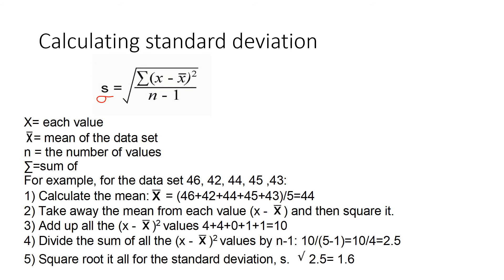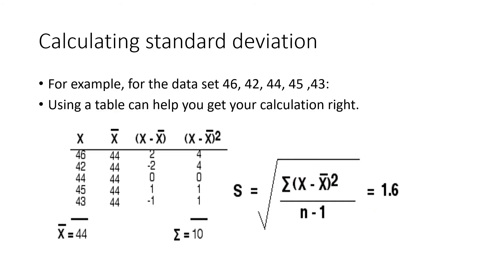You need to be able to describe these steps in the exam. You can also use a table to calculate standard deviation: write down all X values (46, 42, 44, 45, 43), work out the mean in the second column (44 for each), then X minus X-bar, then X minus X-bar squared, then the sum (10). Finally, divide by N minus 1 (5 minus 1 equals 4), giving 10 divided by 4, and square root it to get 1.6.